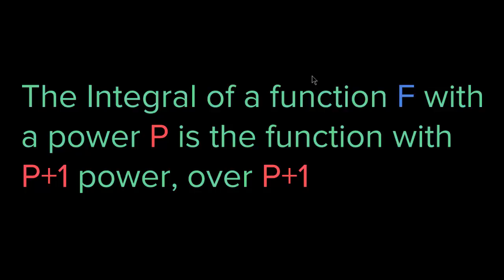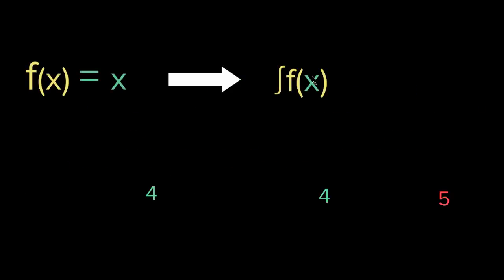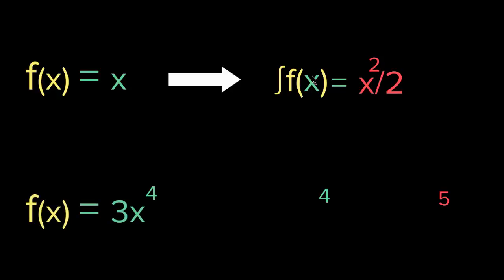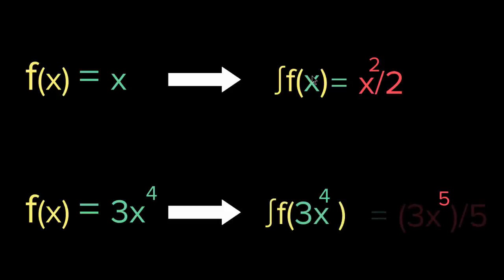So that's the only exception. The integral of a function f with a power p is the function with p plus 1 power over p plus 1. Let me give you a couple of examples. Let's say f of x equals x — the integral is x squared over 2. What if we have f of x equals 3x to the fourth? You add 1 to the 4, so it becomes 3x to the fifth over 5.